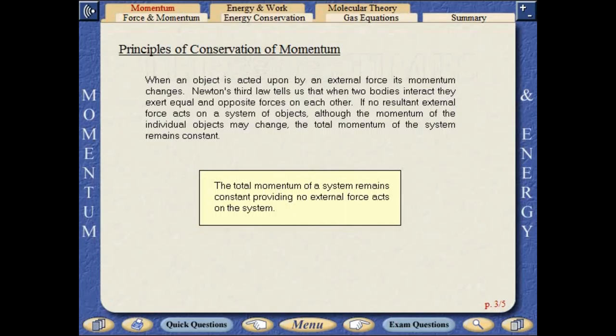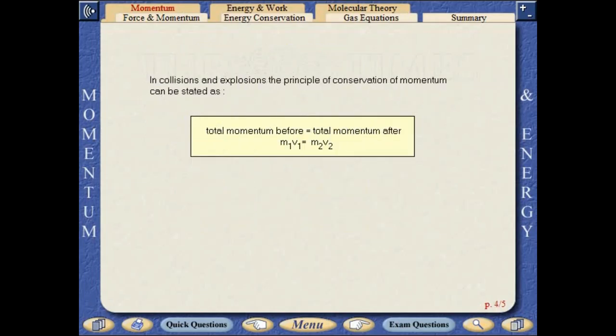The total momentum of a system remains constant, providing no external force acts on the system. In collisions and explosions, the principle of conservation of momentum can be stated as total momentum before equals total momentum after.